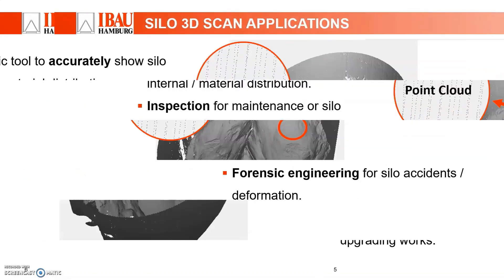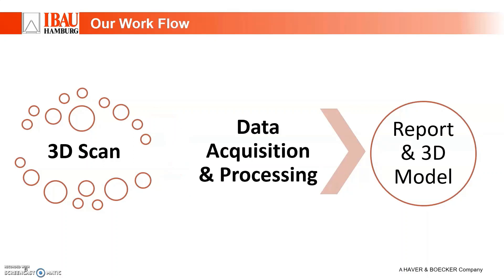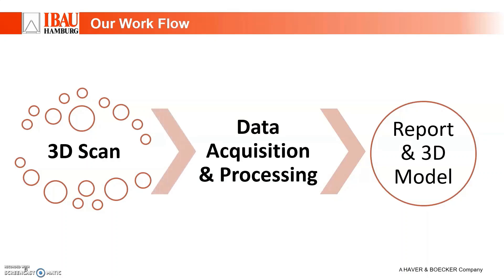Here comes the interesting part — how exactly this works. First, we do a 3D scan at your site. The number of scans will be based on the customer's need, the purpose of the scan, and the complexity of the site. Then we bring the scan data back to our office and run our post-processing works including analysis. This is where we spend a lot of time — usually twice the time required to do the complete scan. Once we are done, you will get a complete report and a 3D model of your silo.